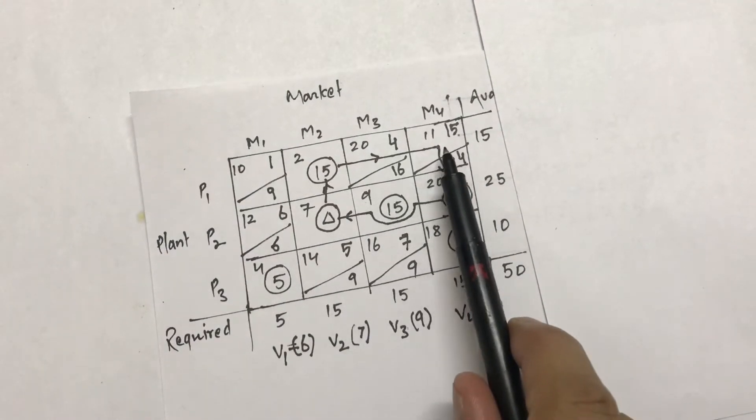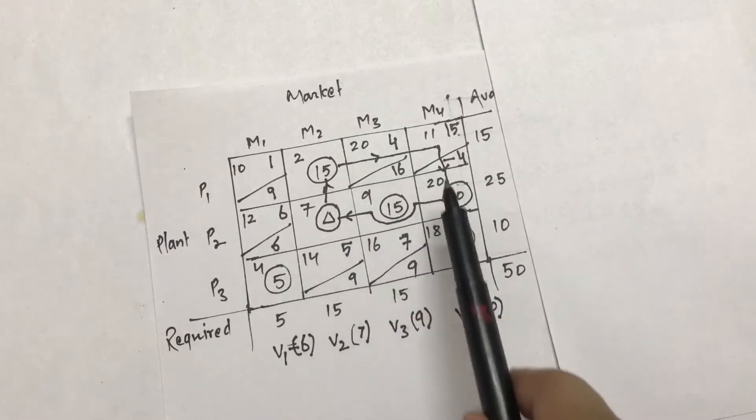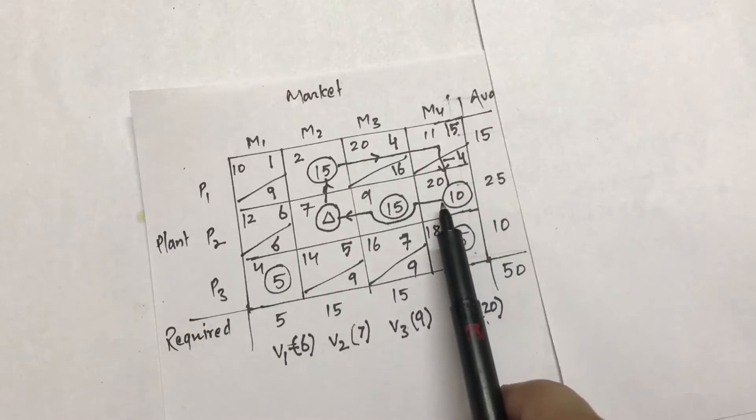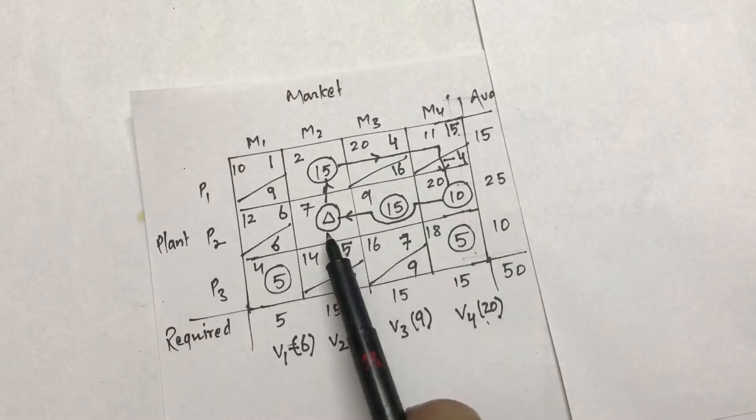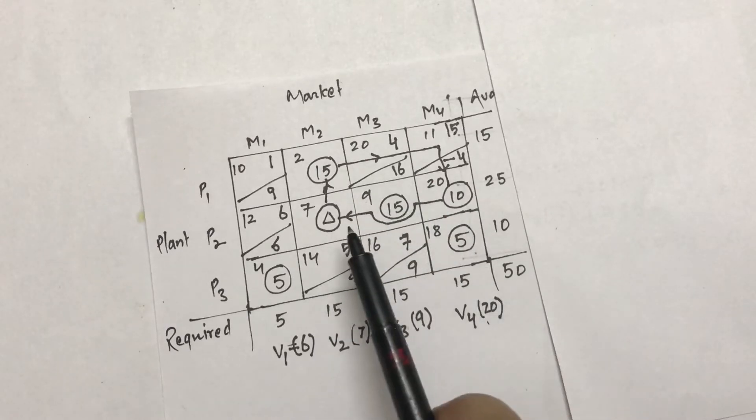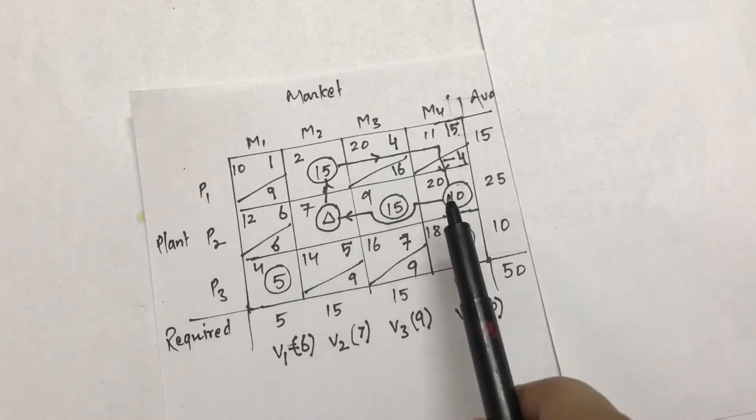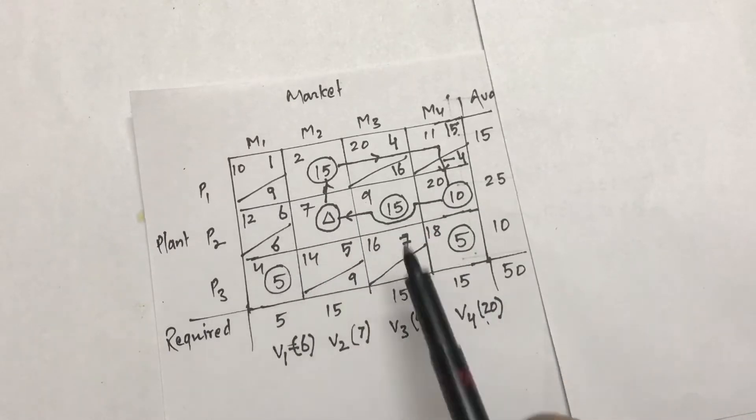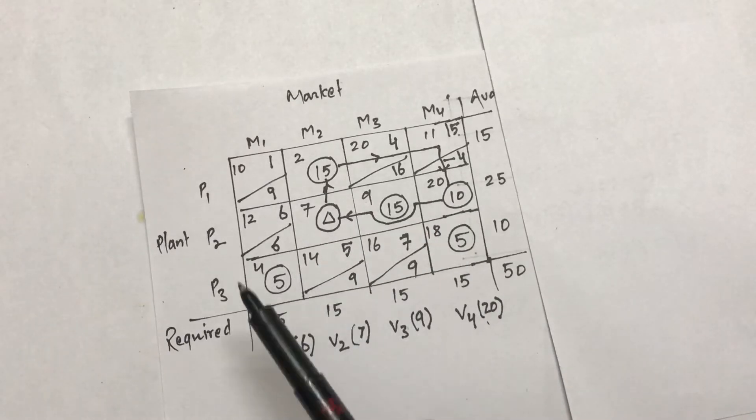So this loop has certain properties. Apart from the negative cell, it must have allocations on all the other corners and you can jump the allocation. When it hits an allocation it should turn 90 degrees. It's not necessary that you find this simple loop. Sometimes you have to go to many places in the table.